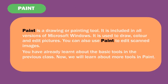Paint is a drawing or painting tool. It is included in all versions of Microsoft Windows. It is used to draw, color and edit pictures. You can also use Paint to edit scanned images. You have already learnt about the basic tools in the previous class. Now we will learn about more tools in Paint.